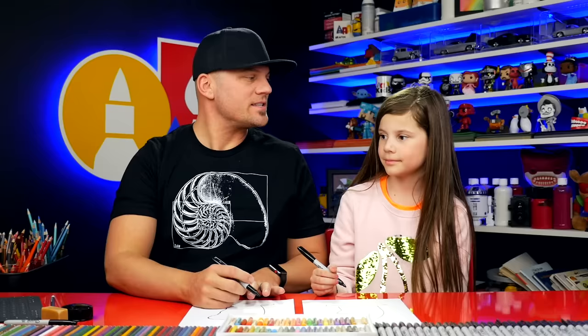What should we draw next? The stripes. That's how you can tell it's the cat in the hat.